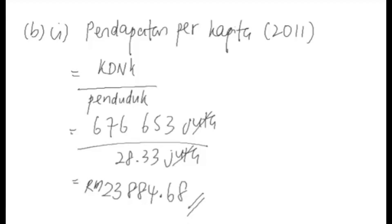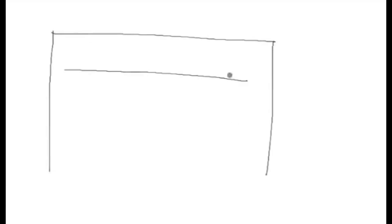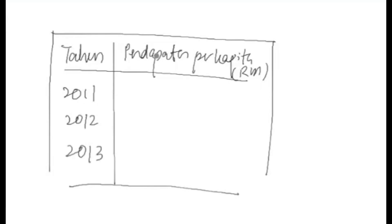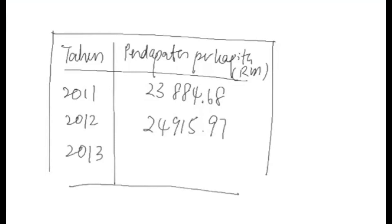Kita hanya guna RM sahaja. Juga sama, kita akan sediakan jadual untuk tahun yang seterusnya. Pastikan unit ukuran dia anda hanya tulis RM sahaja, tak ada juta dah. Ini tahun 2011, 12 dengan 13. Jawapan bagi pendapatan perkapita bagi tahun 2012 adalah RM 24,919.97, dan tahun 2013 adalah RM 25,456.33. Itulah jawapan dia bagi pendapatan perkapita.